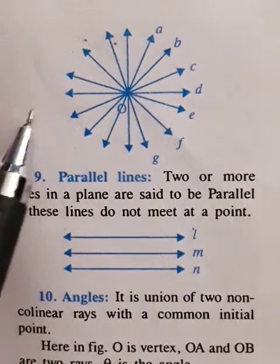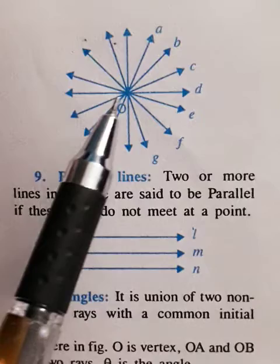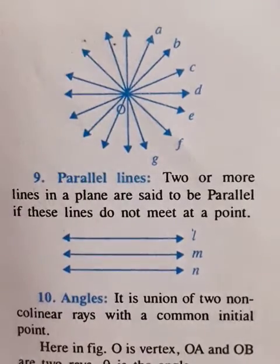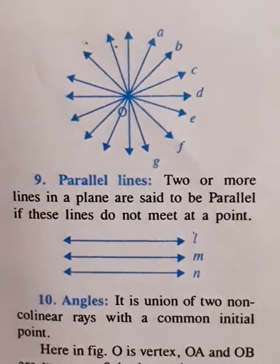These are called concurrent lines and point O where all the lines meet is called point of concurrent or intersection.